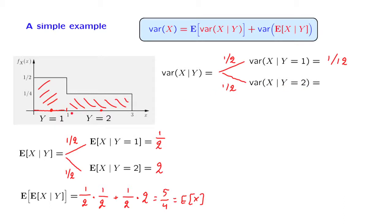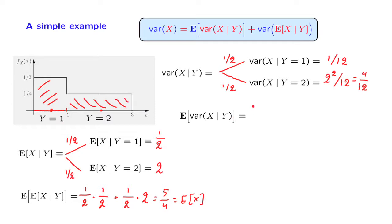If, on the other hand, Y takes a value of 2, then X is a uniform random variable on an interval of length 2. And the variance in this case is 2 squared — where this 2 stands for the length of the interval — divided by 12, which is the same as 4/12. So we now have a complete probabilistic description of the conditional variance as a random variable. With probability 1/2 it takes the value 1/12, and with probability 1/2 it takes the value 4/12. The expected value is therefore 5/24.